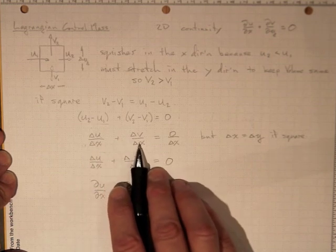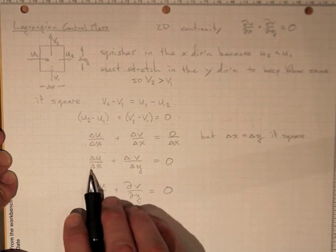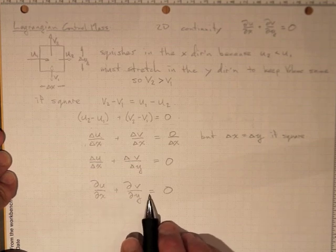Delta u over delta x, delta v over delta x, zero over delta x, just like last time. And we wind up with di u di x plus di v di y equal to zero.